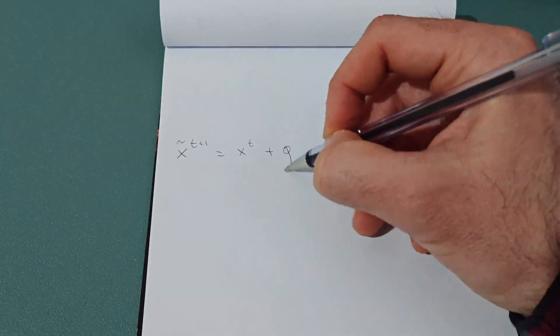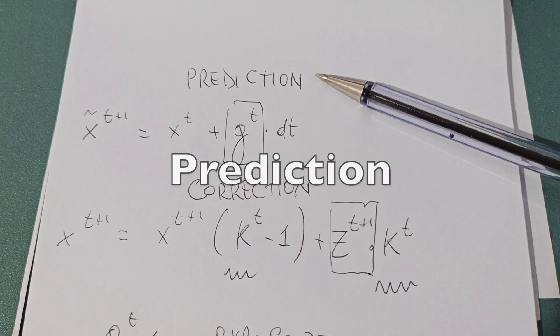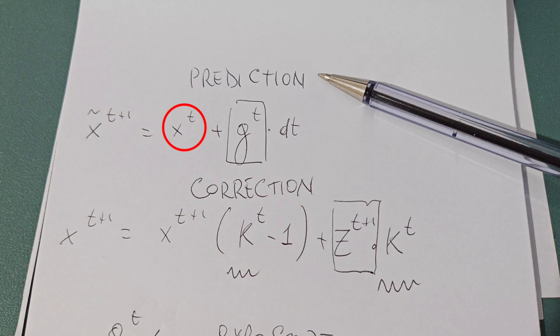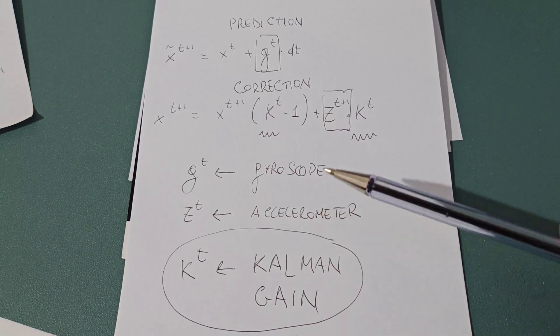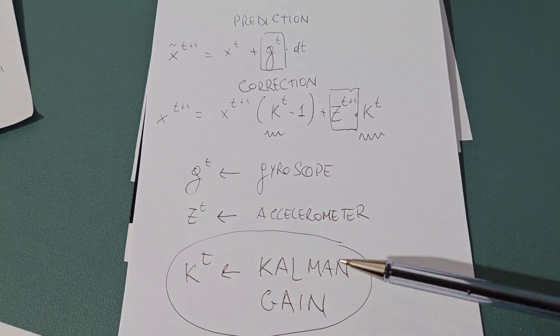The Kalman filter works in two steps, prediction and correction. In the prediction step, we estimate the next state using the previous state and the rate of change measured by the gyroscope. Then, we compute the Kalman gain, which is a function of the uncertainties in both the prediction and the new measurement.